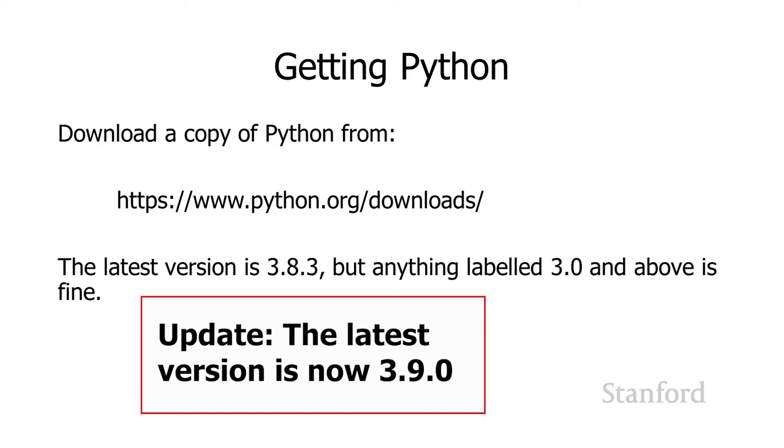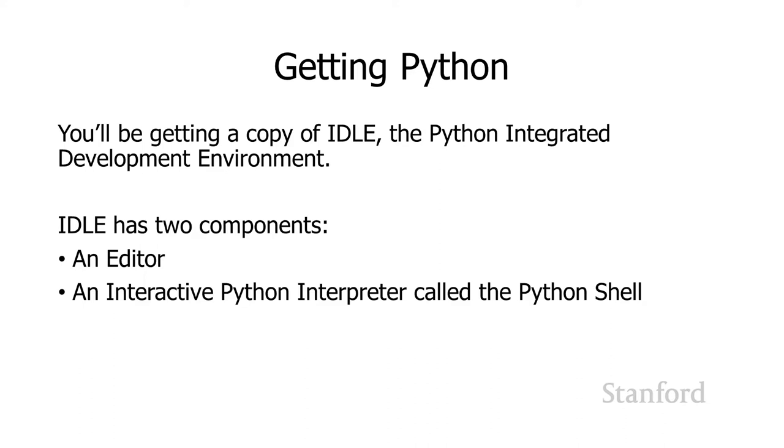When you download Python, you're going to get a bunch of different programs associated with Python and documentation. The main thing we're going to be focusing on is IDLE, which is the Python integrated development environment. There are two main components to IDLE. There's an editor, which we'll talk about in a little bit, and then there's an interactive Python interpreter called the Python shell. And this is what we're going to focus on in this video.